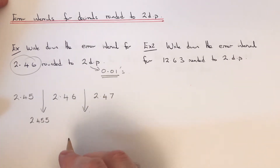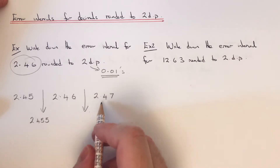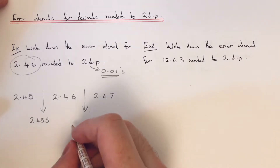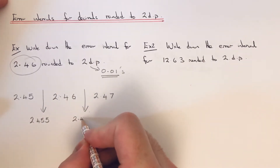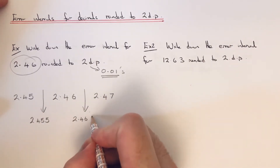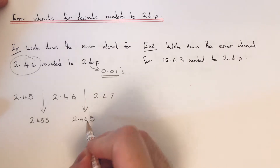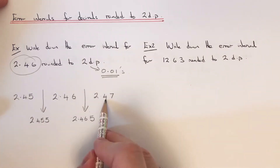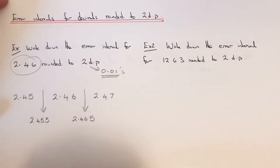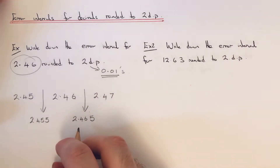The number halfway between 2.46 and 2.47 will be 2.465. Again, you could just add these two decimals and then half the answer.